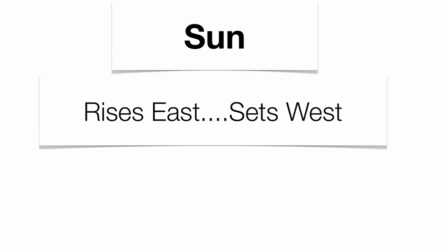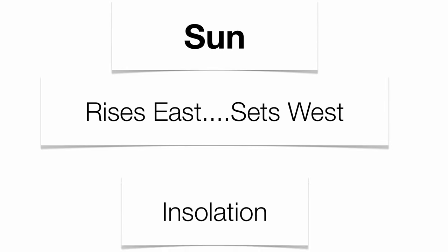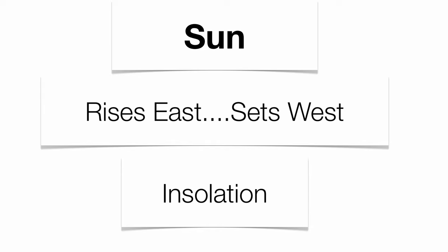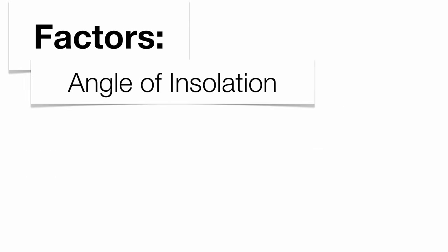We know that our sun rises in the east and sets in the west, but the amount of energy that we get from the sun — the amount of incoming solar radiation — is going to alter based upon the season. There are some factors that influence this. The angle of insolation in the morning and the evening is much lower than it is in the afternoon, so that's why it's cooler in the morning and evening and a little bit warmer in the afternoon.